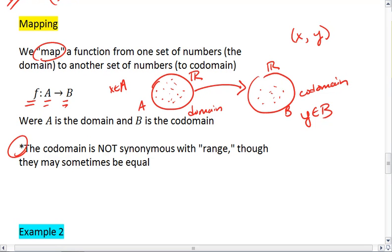An important note to make here is that the codomain is not synonymous with the range, though they may sometimes be equal. And the easiest way to show these is, again, just to dive into an example and start getting you familiar with the terminology.